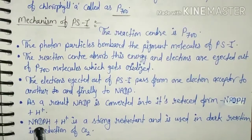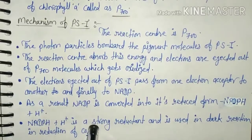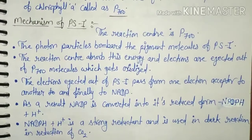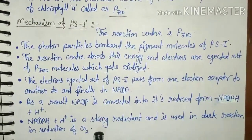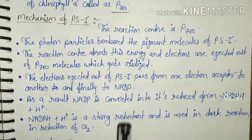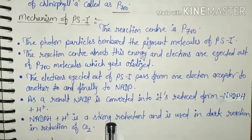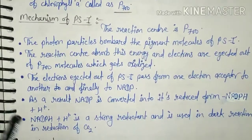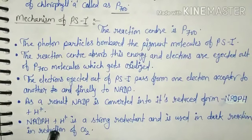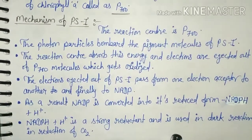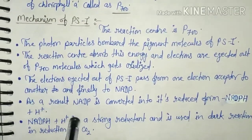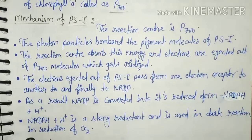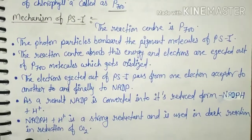NADPH₂ is a strong reductant and it is used in the dark reaction for the reduction of CO₂ molecules, which form carbohydrates. In light reactions, ATP and NADPH₂ are formed and oxygen is evolved. Through PS1, which is involved in cyclic and non-cyclic photophosphorylation, NADPH₂ is formed and used in the reduction of CO₂ molecules to form carbohydrates in dark reactions.